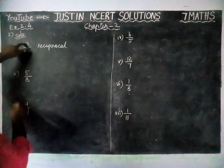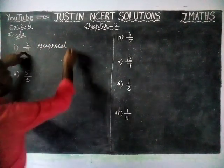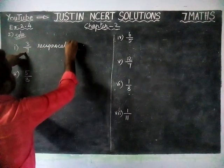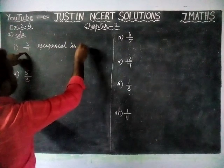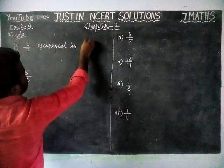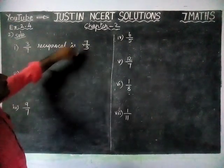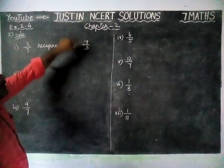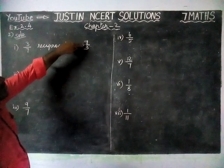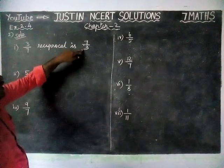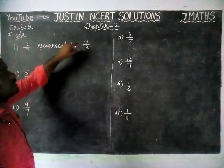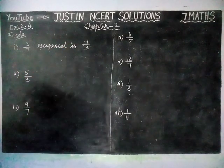Reciprocal of 3 by 7 is 7 by 3. Here, the numerator is greater than the denominator, therefore this is an improper fraction.